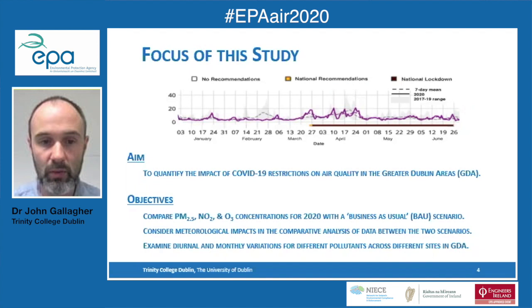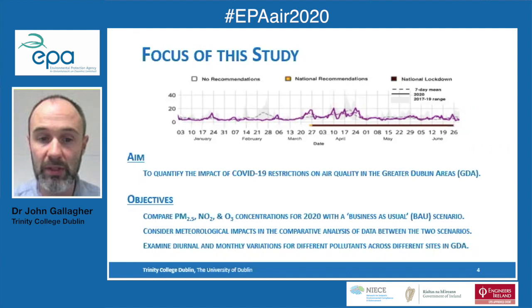The focus of this study was to quantify the impact of COVID-19 restrictions on air quality in the Greater Dublin area. We hoped to achieve that by undertaking three objectives: comparing PM2.5, NO2 and NO3 concentrations for 2020 with a business-as-usual scenario, considering the impact of meteorological conditions in the comparative analysis, and examining both diurnal and monthly variations for each pollutant across different sites in the Greater Dublin area.